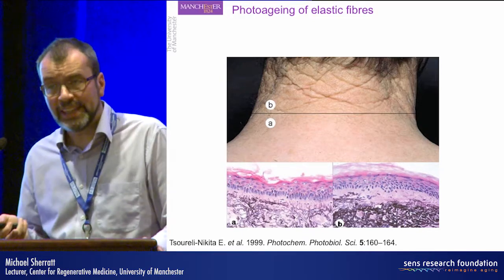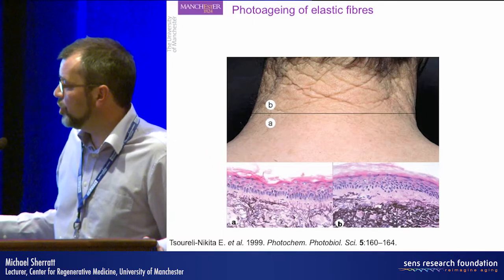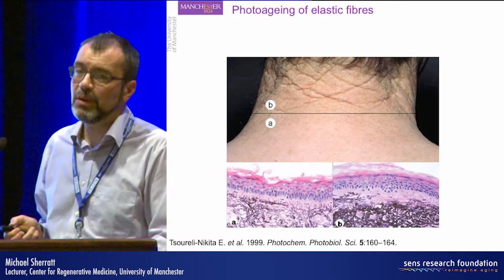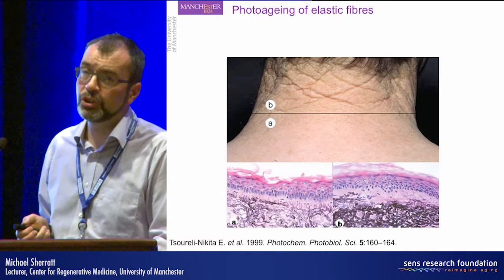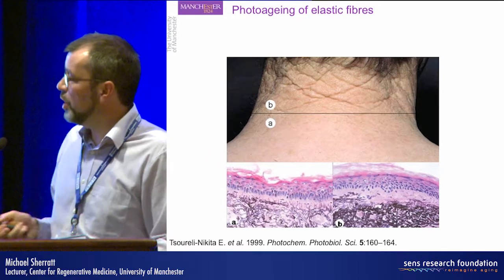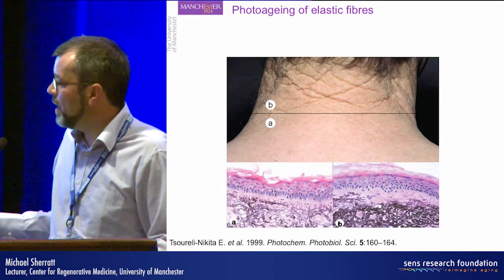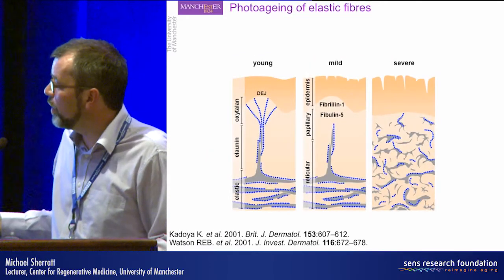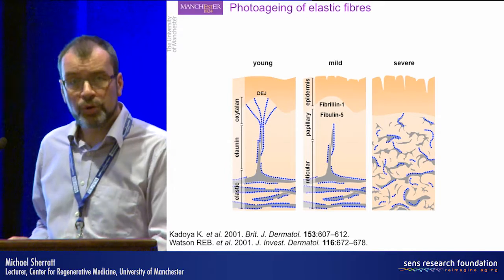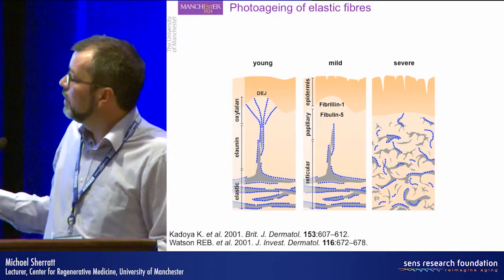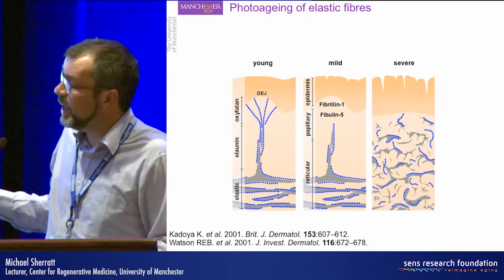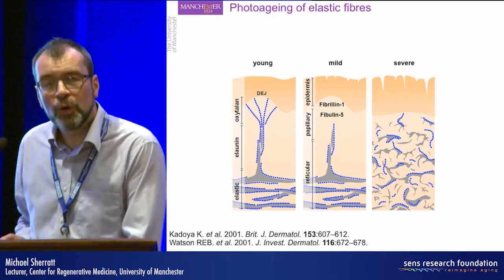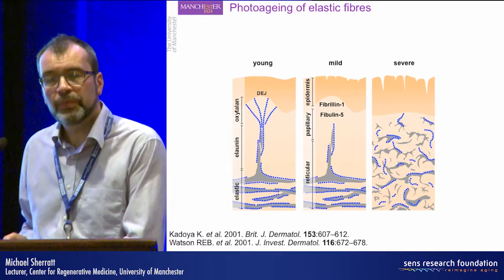What we see is that the fibrillins, shown in red, are particularly susceptible in these UV chromophores. But so too are many other elastic fiber-associated proteins, shown in orange. Crucially, the fibrillar collagens up here are almost devoid of these UV chromophores.